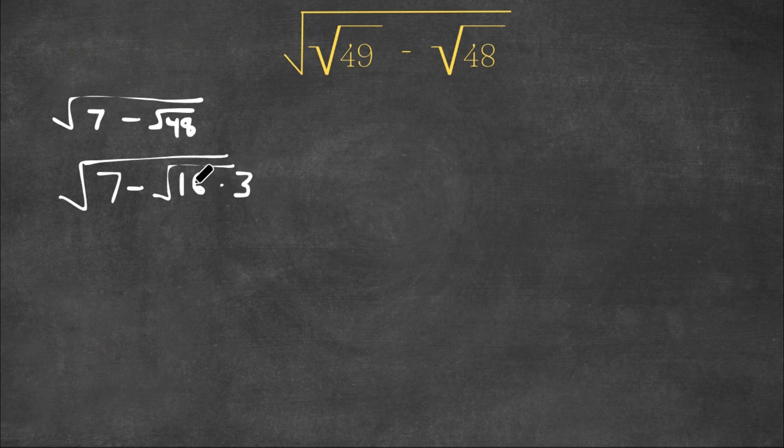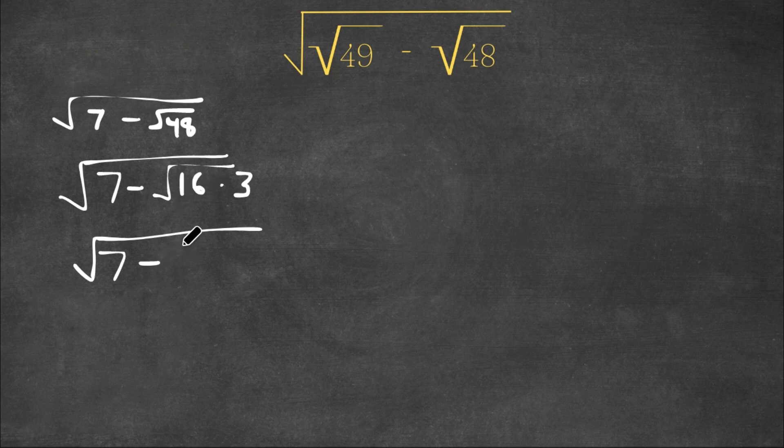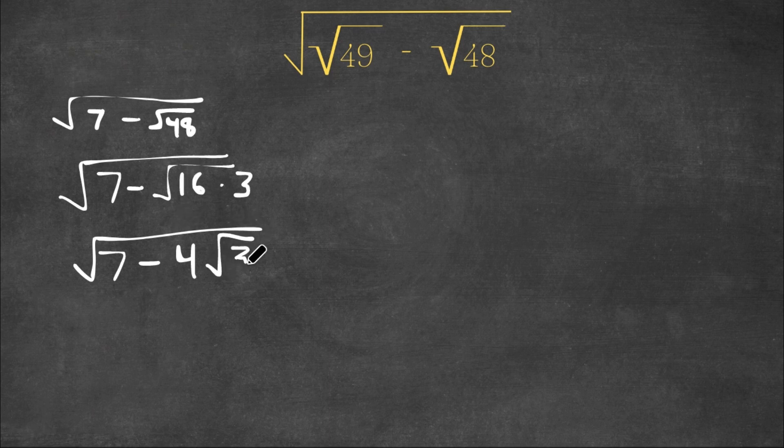Now the square root of 16 is 4. So we can write 4 at the end of the radical, and we still have 3 because the square root of 3 is a decimal number, not a whole number.